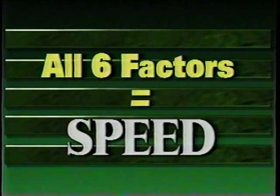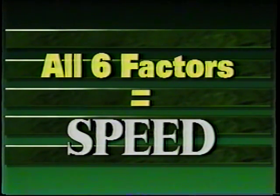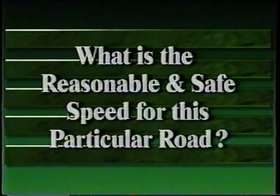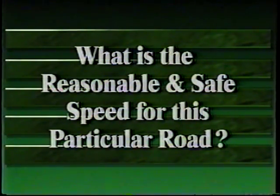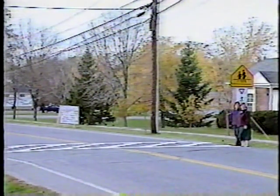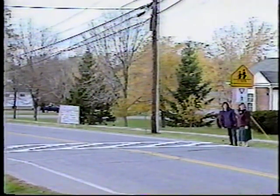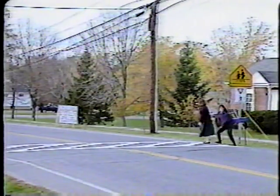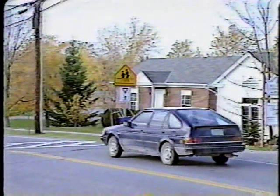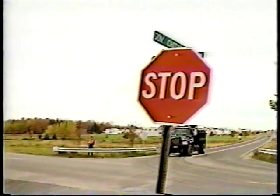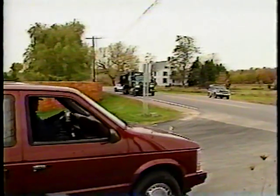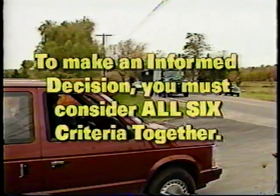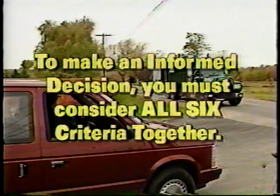With the data collected using the six criteria, you will have the information to determine a proper speed for the road under consideration. For each road, you are trying to answer the question: what is the reasonable and safe speed for this particular road? A reasonable and safe speed is one that gives a driver time to react and stop or slow down sufficiently to avoid potential conflicts while driving at a comfortable speed. No one criterion by itself determines reasonable and safe — to make an informed decision, you must consider all six criteria together.